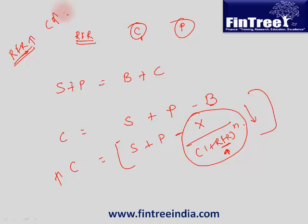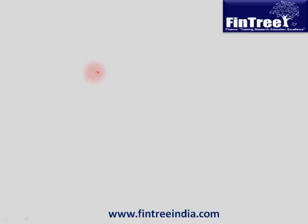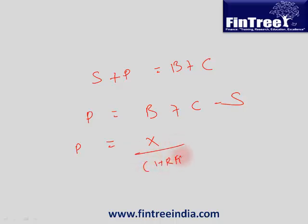For put option, again the same logic. S plus P is equal to B plus C, so now we would say P is equal to B plus C minus S. P is equal to X divided by (1 plus RFR) raised to n plus C minus S. When RFR increases, the whole term will decrease, and if the whole term decreases, value of put option will decrease.